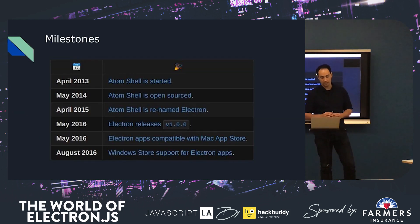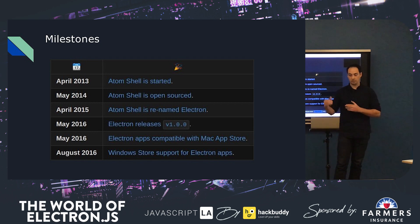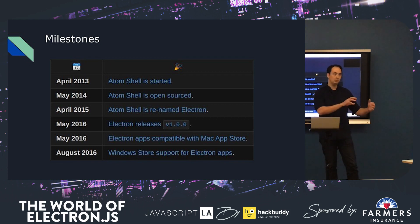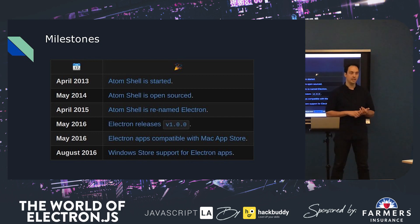A little bit about the history of Electron. It was created by GitHub because they were making the text editor Atom and wanted to build it with web technology. They created Atom Shell, which later became Electron, in 2013. In 2014 they open sourced it, and it got a huge response. Microsoft and Slack were early adopters and contributed a lot to the Electron core APIs. In 2015, they renamed it to Electron so it wasn't coupled to the Atom editor. Version 1 was released in 2016. Shortly after, you could upload and sell Electron applications on the Mac Store, then the Windows Store, then Linux package managers, and even the Steam store.